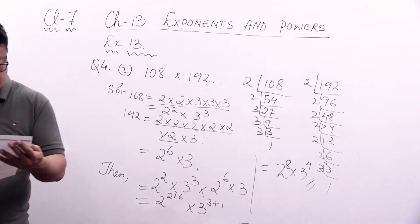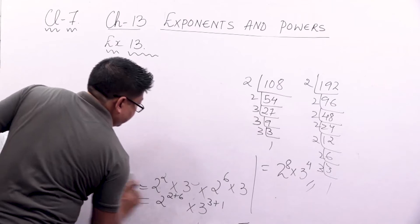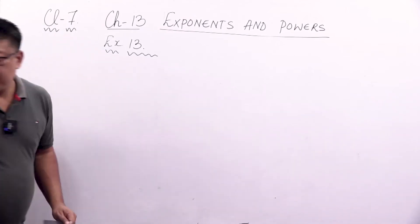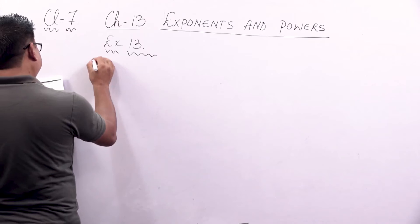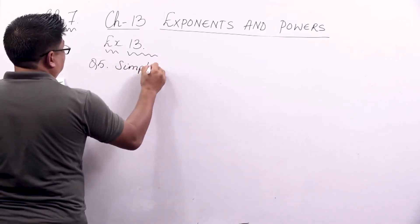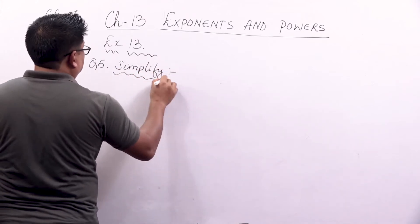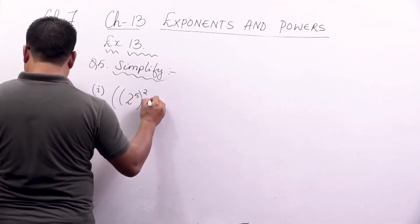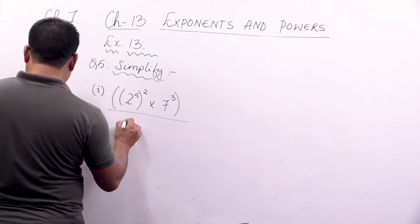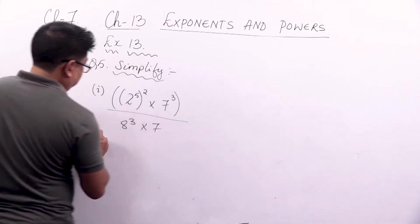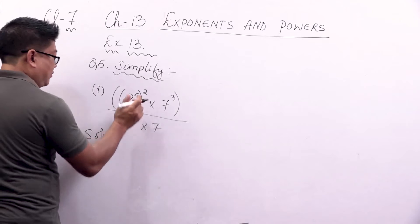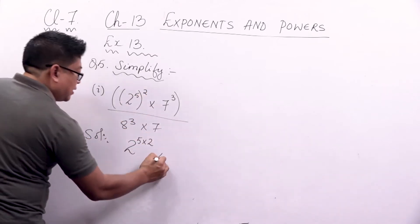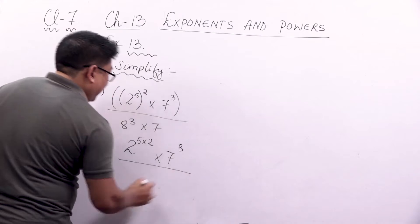Let's move on to question number 5: Simplify. The first question is 2 to the power 5, to the power 2, into 7 to the power 3, divided by 8 to the power 3 into 7. First look at this number. We will simplify it. Power of powers — multiply the powers — giving 2 to the power 10 into 7 to the power 3, divided by 8 to the power 3 into 7.